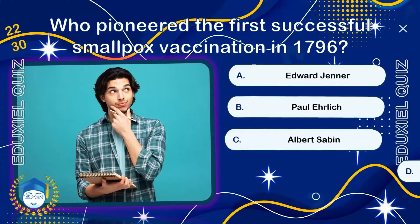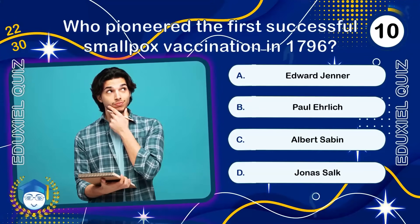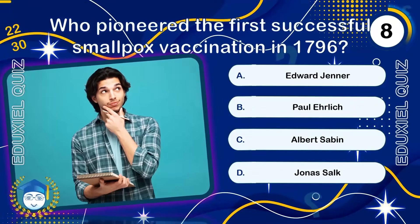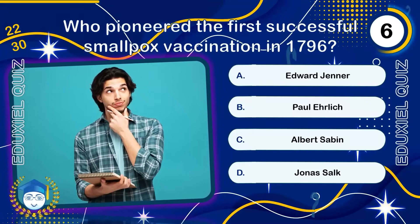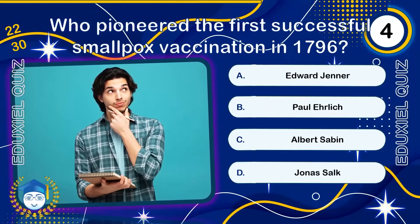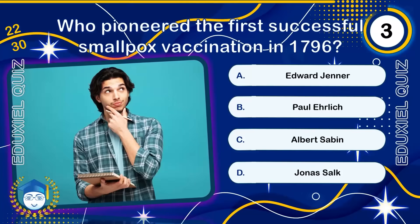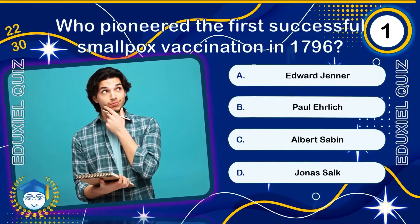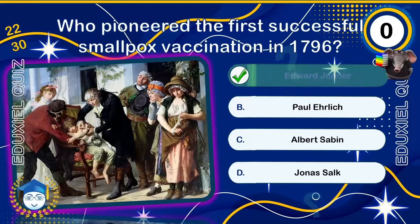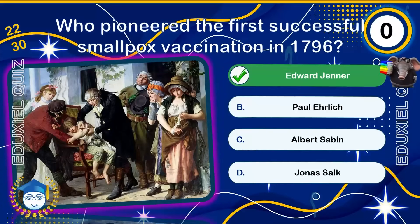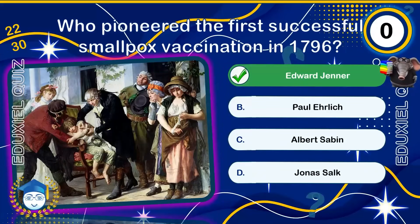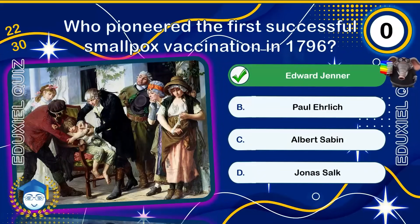Who pioneered the first successful smallpox vaccination in 1796? Edward Jenner developed the world's first vaccine in 1796, using cowpox material to protect against smallpox. His work saved millions of lives and laid the foundation for modern immunology. He is often called the father of immunology.